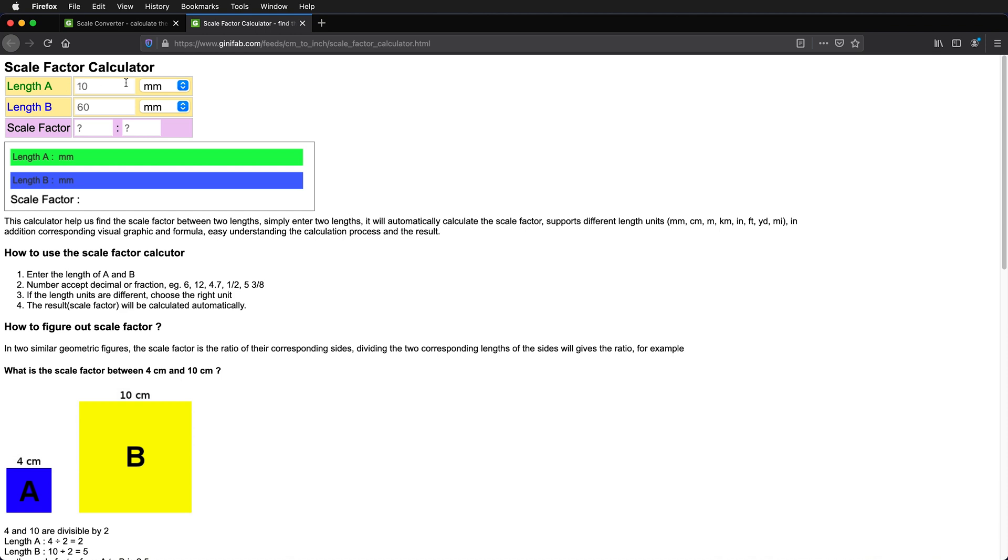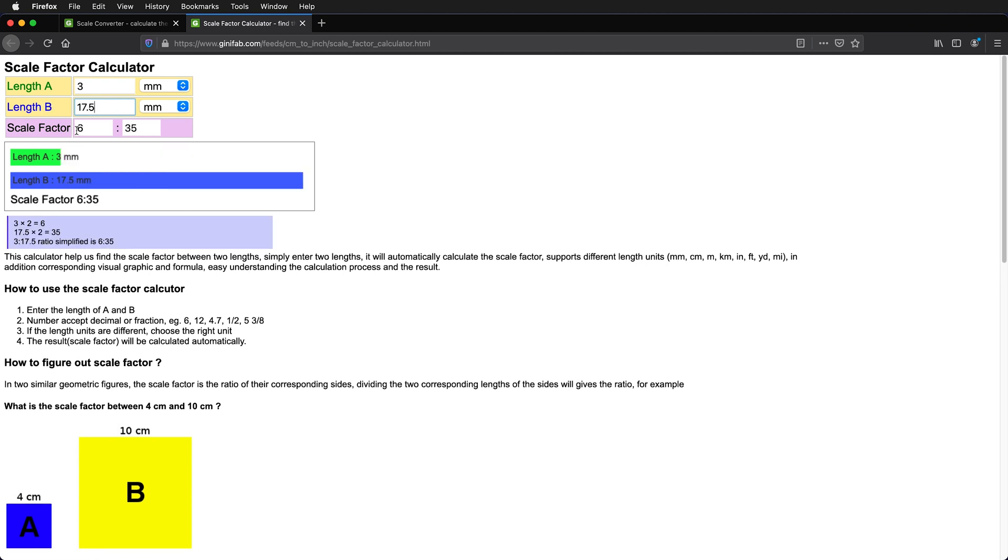Now we can put in our length A's and our length B's. For a single sheet of cardboard scale model, type in 3 millimeters. And then for 3/4 inch plywood, we can type 17.5 millimeters. This gives us a scale factor of 6 to 35.